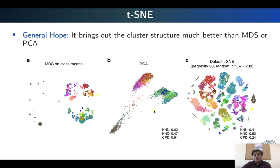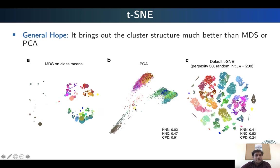Here you see a comparison of T-SNE against two other linear dimension reduction techniques, MDS and principal component analysis. The general hope is that T-SNE can bring out the cluster structure much better than MDS or PCA. For this particular single cell RNA sequencing dataset, multidimensional scaling and PCA are not really bringing out the cluster structure as evidently as T-SNE. When you look at the 2D plot for T-SNE it is actually separating out the clusters into different groups much better compared to PCA or MDS.